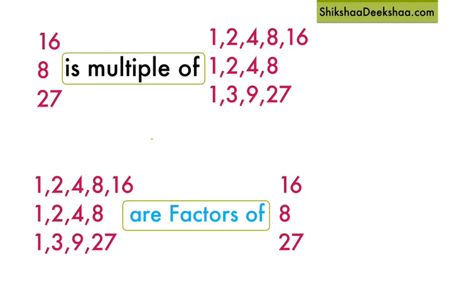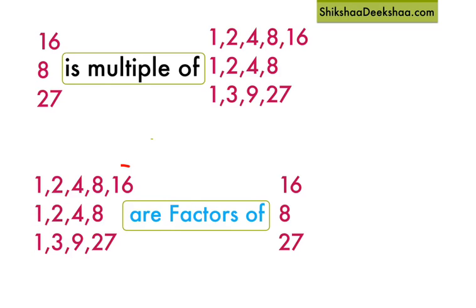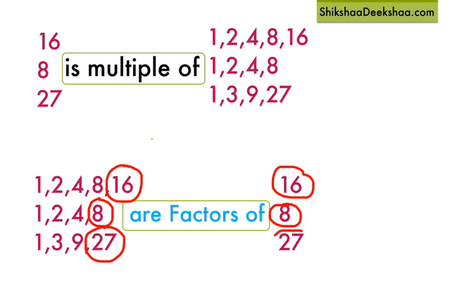Now let's move on to the properties of factors. You can see that 1 is a factor of every number. And every number is a factor of itself — 8 is a factor of 8, 27 is a factor of 27, and 16 is a factor of 16.